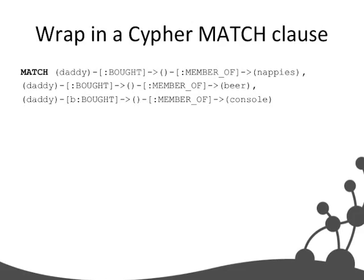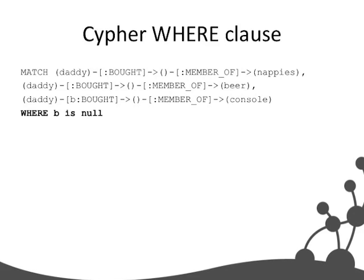In my experience of SQL databases, the query never emerges from the data structure — someone has to do Nobel-level genius work to make the query match the structure. In graph databases, queries naturally emerge because the data structure guides you. The full Cypher query says: match where my candidate daddy bought something in the beer category, bought something in the nappies category, and where there does NOT exist a purchase of Xbox — those are the people whose buying behaviour I can influence.